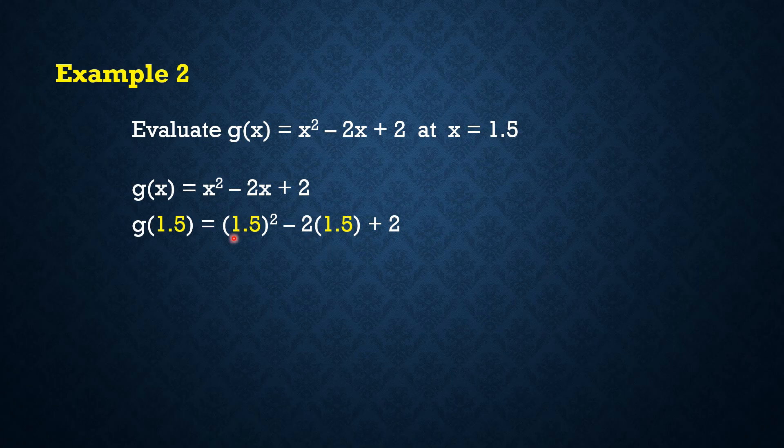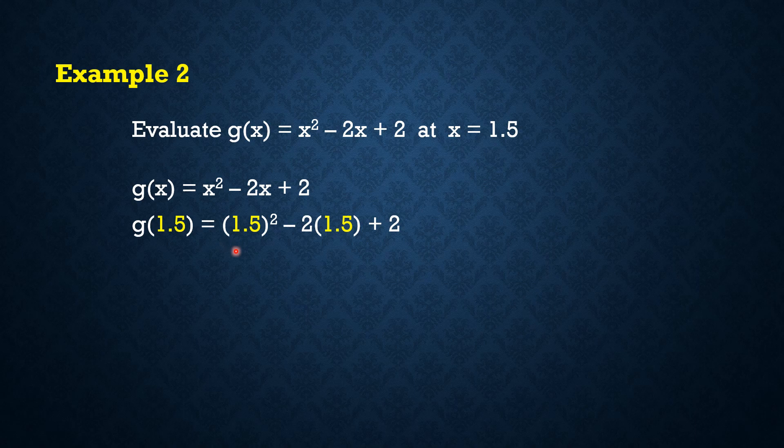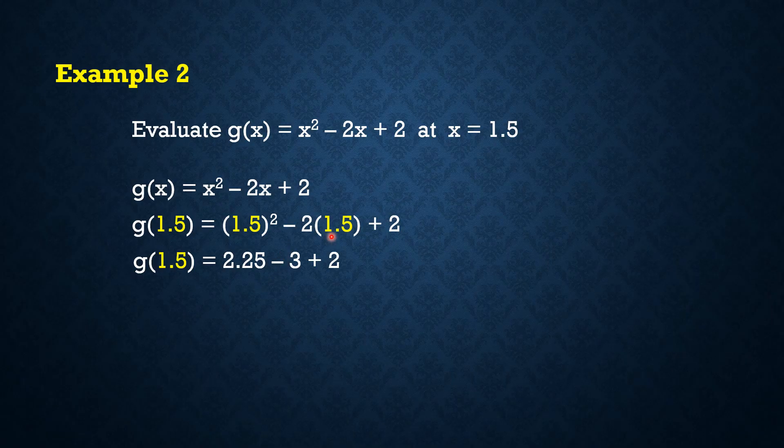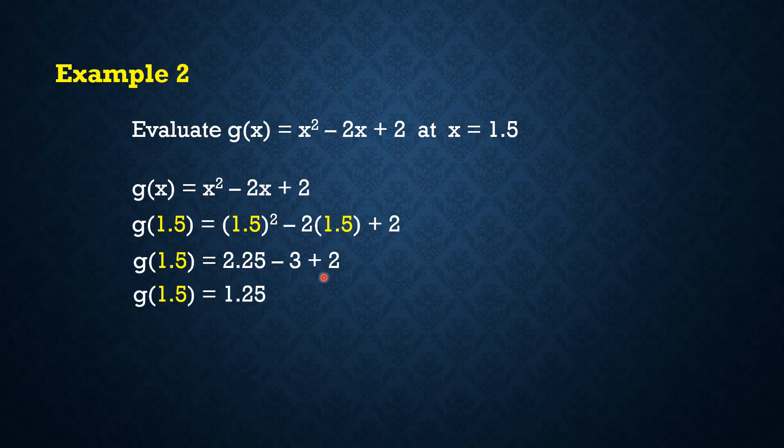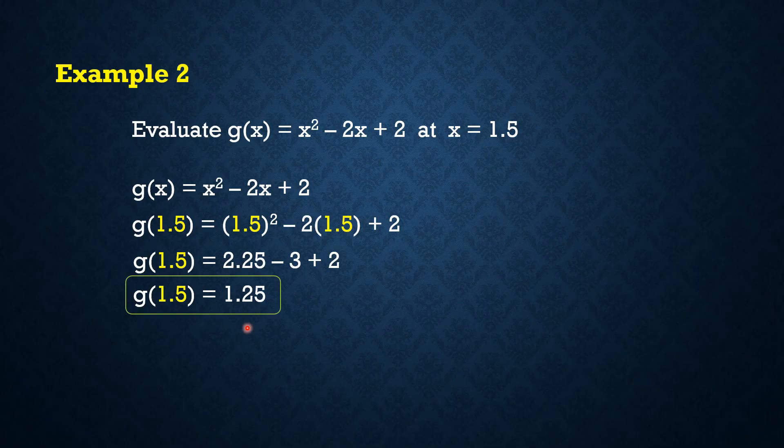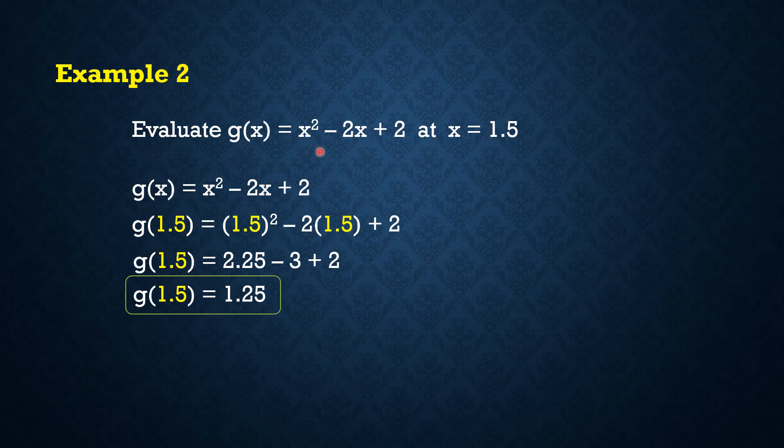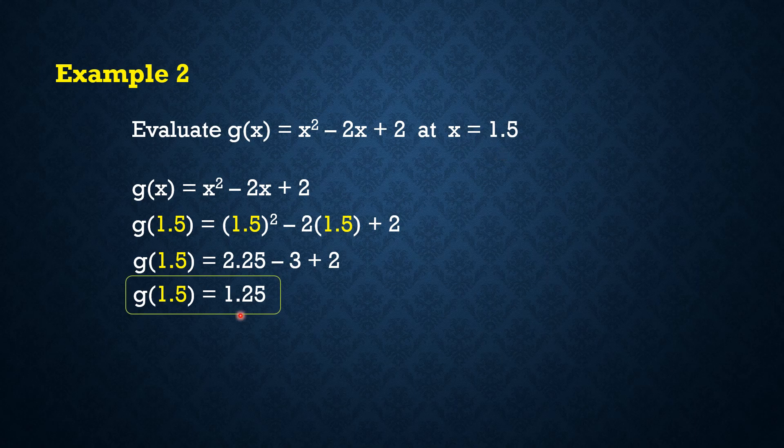So in this case, unahin natin of course si 1.5 squared. So 1.5 squared means 1.5 times 1.5 and that gives us 2.25. Negative 2 times 1.5 is negative 3 and then we still have plus 2. By simplifying, 2.25 - 3 + 2, we get g(1.5) = 1.25. So it means that the value of the function g(x) = x² - 2x + 2 when x = 1.5 is 1.25.